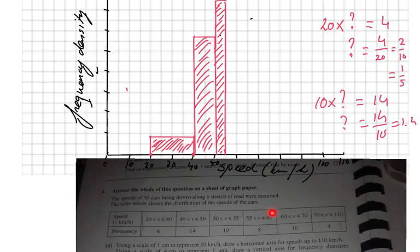From 55 to 60, again a width of 5. The frequency is 8. So you ask yourself, how high should it be? 5 times, and then you will find out it's 1.6. So a little bit more than 1.5, 1.6. But you do that accurately. I want you to measure that with your ruler and make sure you're exactly on 1.6.